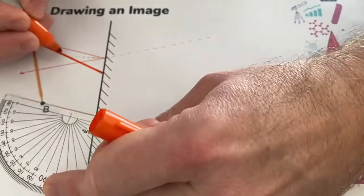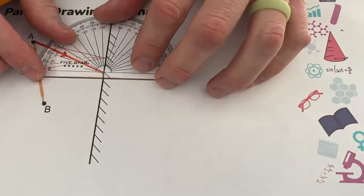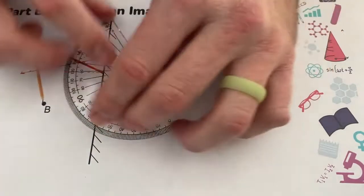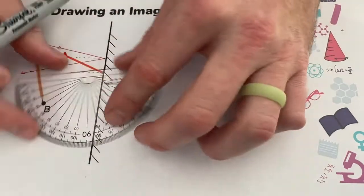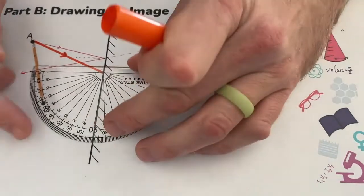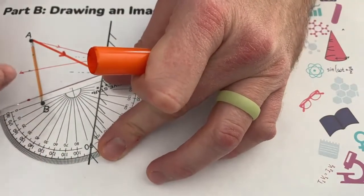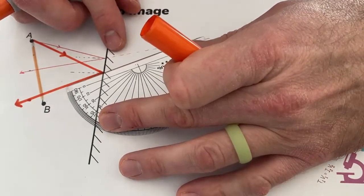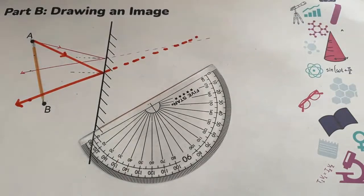I mark off 13 degrees on the other side and draw my first reflected ray — again, make sure the arrow is on there — then extend it back behind the mirror. For ray number two, I draw another incident ray, include the arrow to show direction of travel, draw my normal, and measure my angle of incidence. That looks like it's pretty much exactly 25 degrees. I come back to the other side and draw in the reflected ray with the arrow, then extend this line back to the point where those two cross.